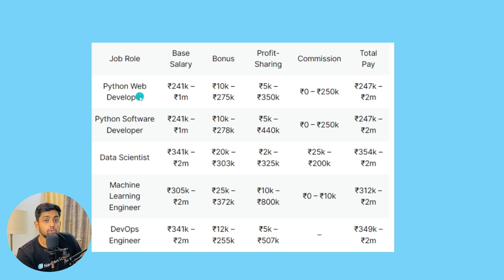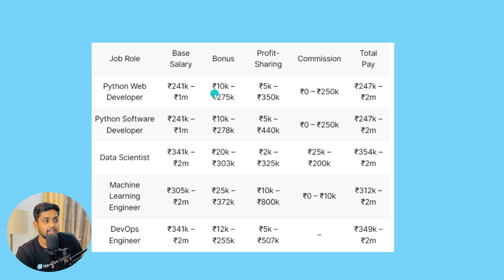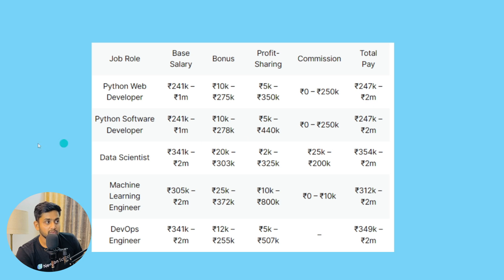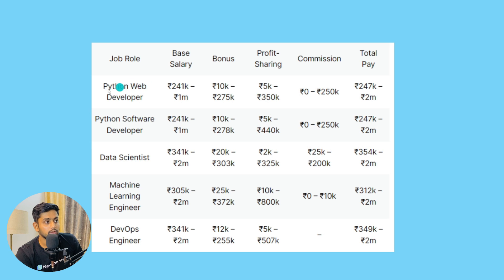Looking at salaries by job role: for a Python Web Developer, the base salary ranges from 241K to 1M rupees, with bonuses and profit sharing depending on the company, and the total pay ranges from 2 lakh 47 thousand to 2M rupees. For a Python Software Developer, the base salary is also 241K to 1M, with profit sharing higher than in web development. The overall salary is quite similar when comparing Python Web Developer and Software Development roles.